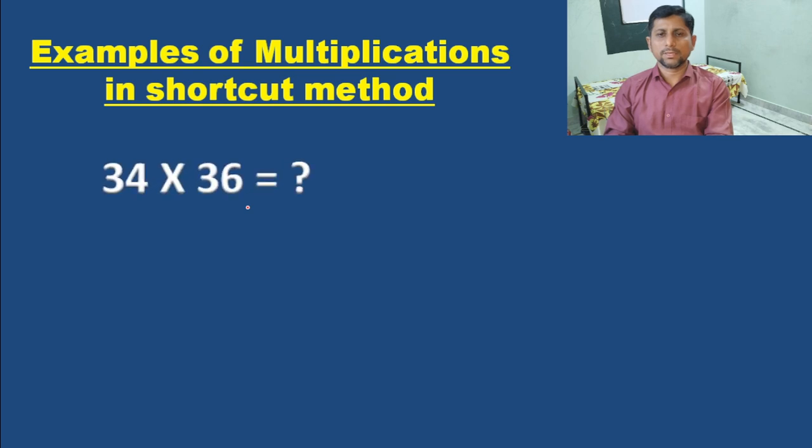Let's see some examples on shortcut methods or logic methods. Example: 34 into 36. This is multiplication of a two-digit number with a two-digit number. Just observe the unit digits here - the unit digits are 4 and 6. If you add 4 and 6, we will get answer 10.